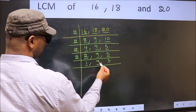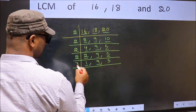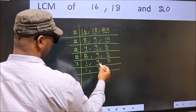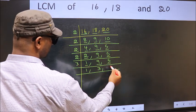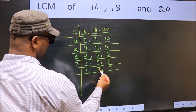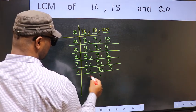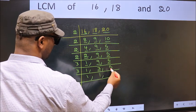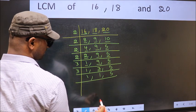So focus on the other number 9. 3 times 3 is 9. The other number 5 — not divisible by 3, so you write it down as it is. Now here we have 3. 3 is a prime number, so 3 divided by 3 gives 1. The other number 5 — not divisible by 3, so you write it down as it is.